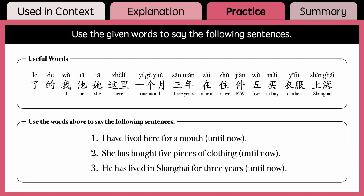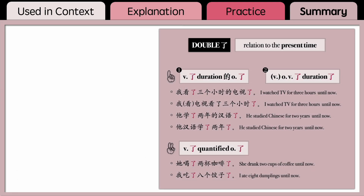Alright, now let's do some practice. Use these words to say the following three sentences — you may use the same word more than once. In summary, you can use the double 了 construction to express actions that have been completed until now. It indicates relation to the present time under two circumstances: one is when talking about the duration of completed actions, and the other is when the completed actions have quantified objects. Whether the actions will continue or not is up to the speaker.